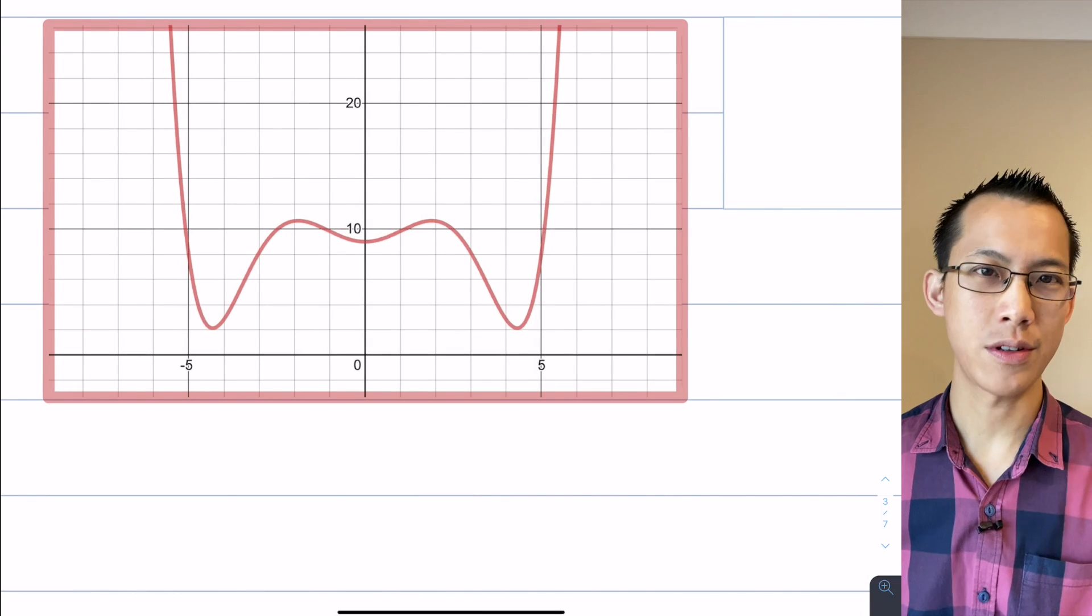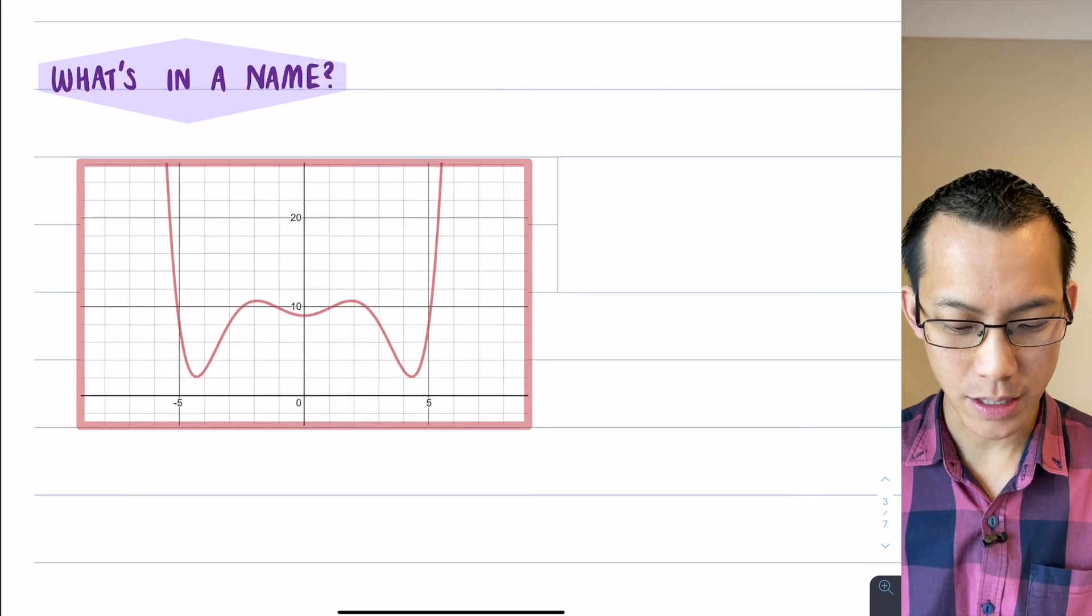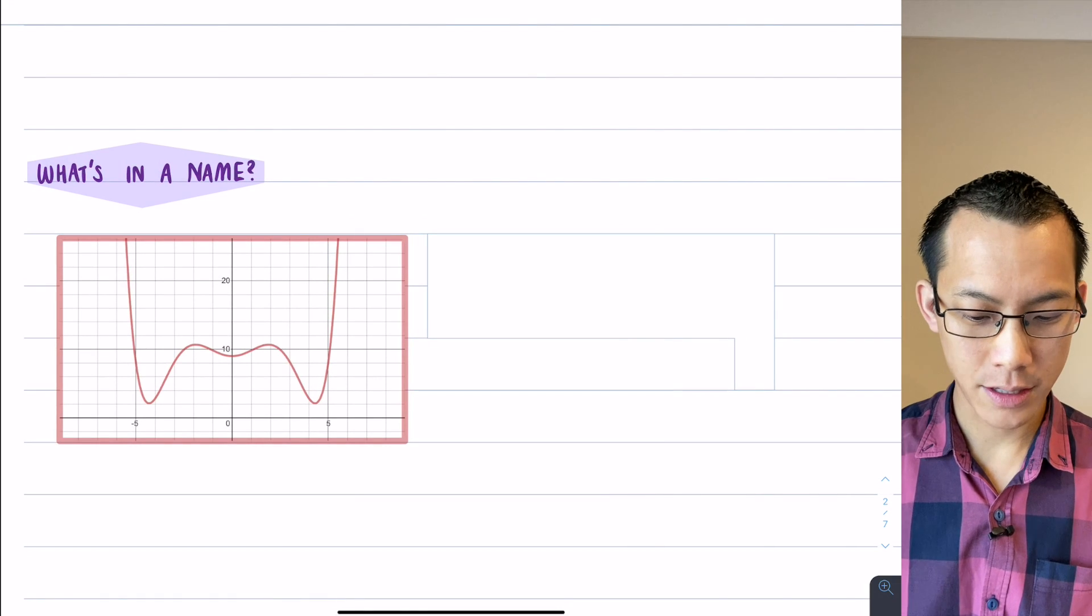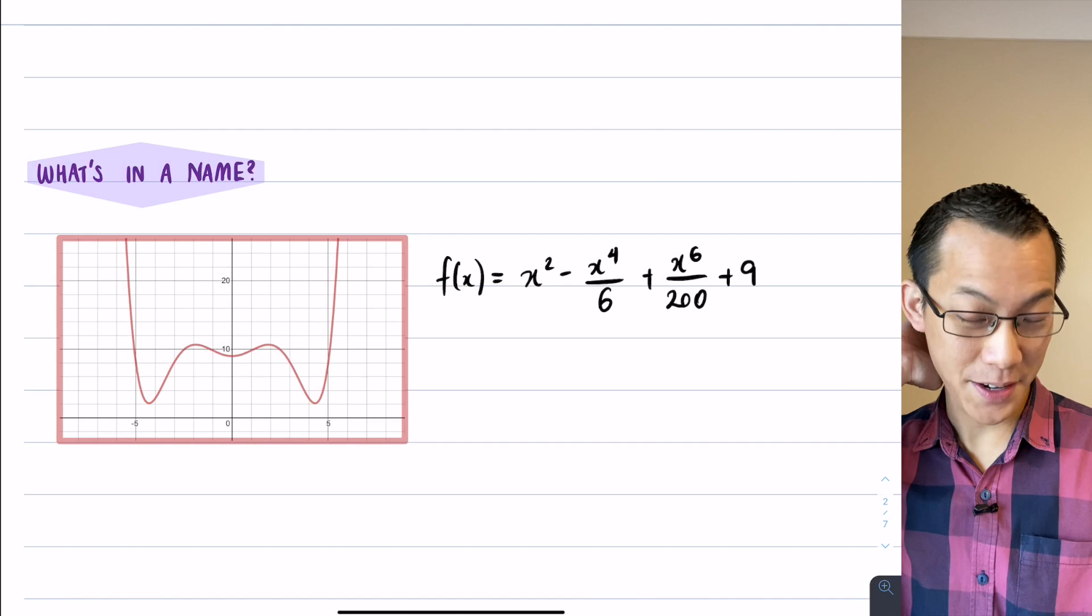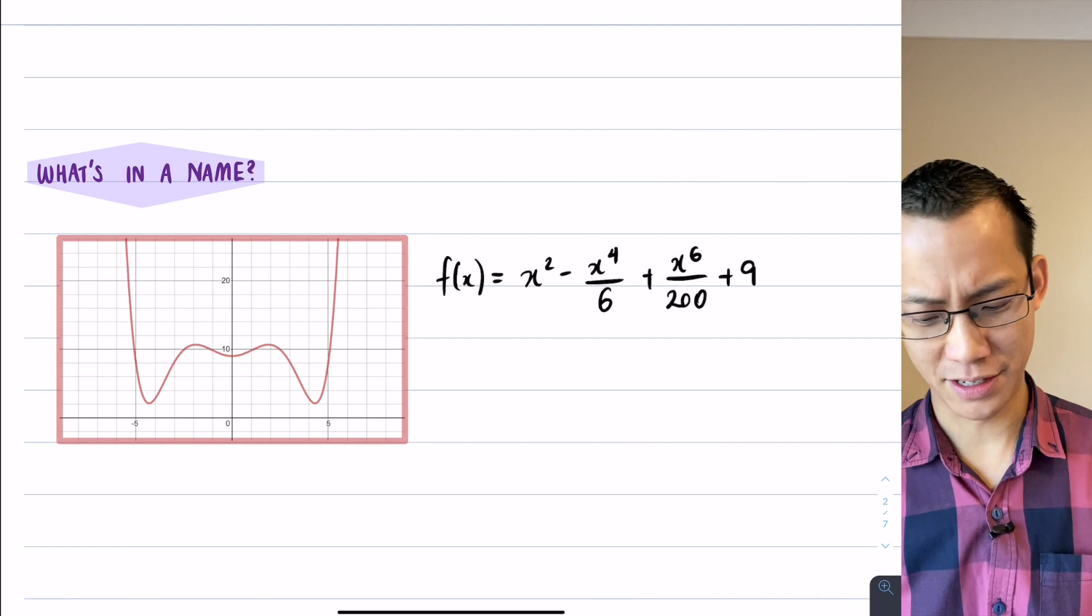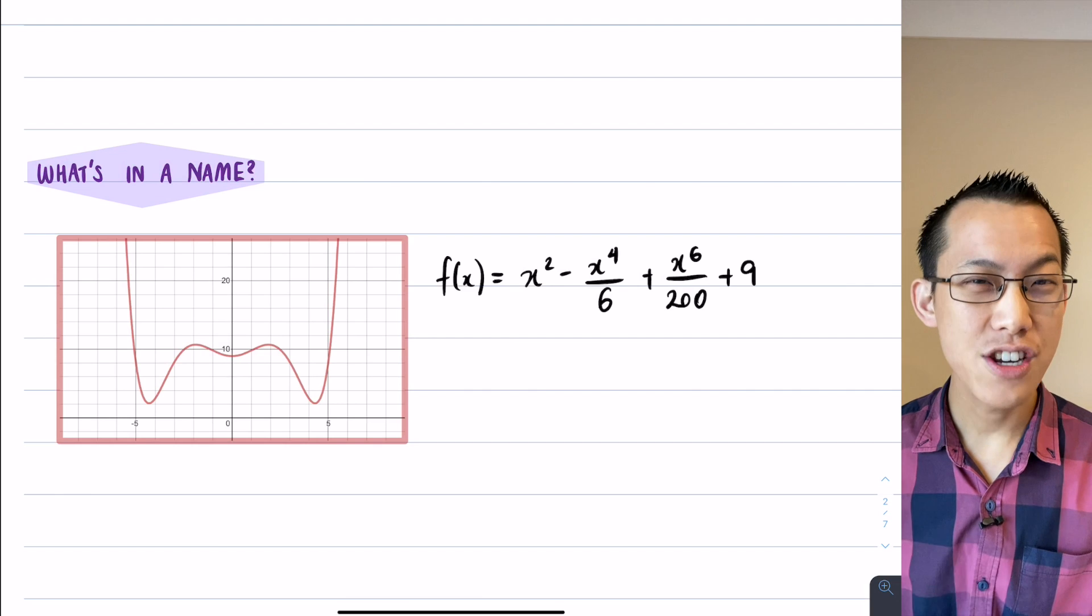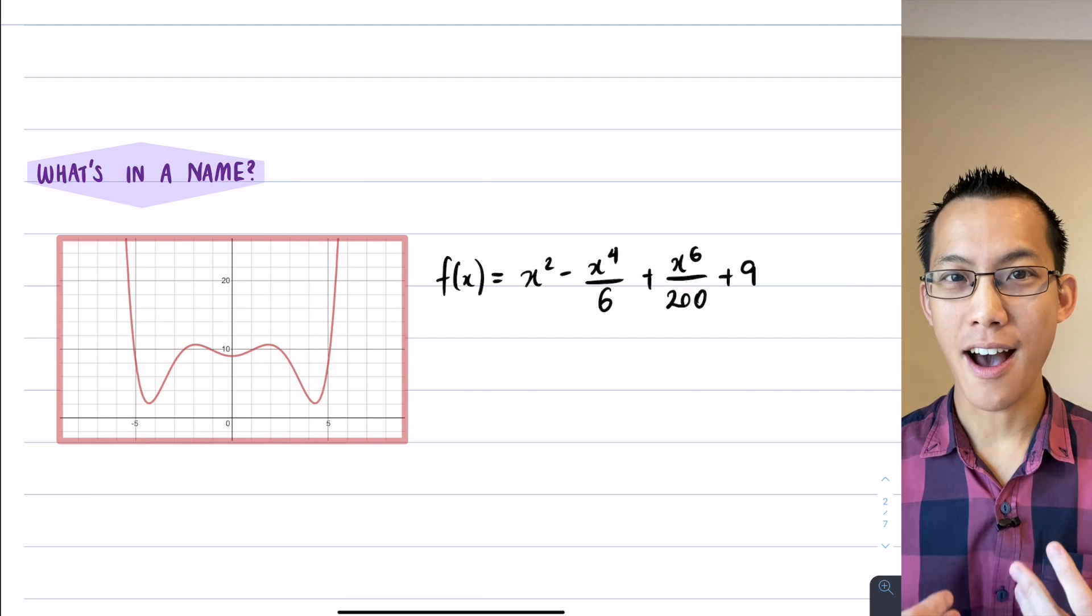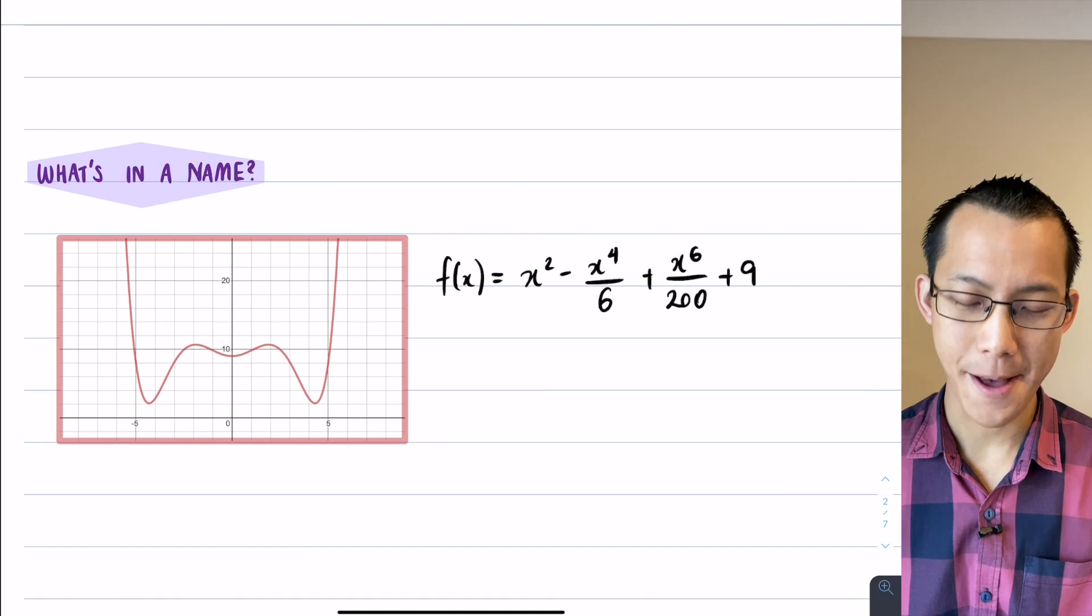This is the red function that I showed you earlier which had even symmetry, and you might have thought to yourself, well how did I come up with this function? How did I know that it would be symmetrical? Well this is the actual function here. It's a bit of a garbled mess, I know, x squared minus x to the 4th over 6. I came up with this function because I knew that it would give me a function with reflection or symmetry. It's an even function. How did I know that?